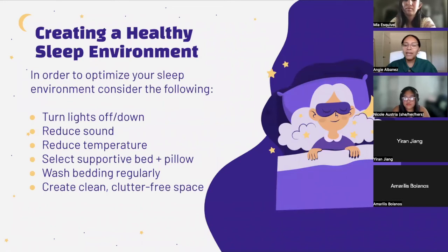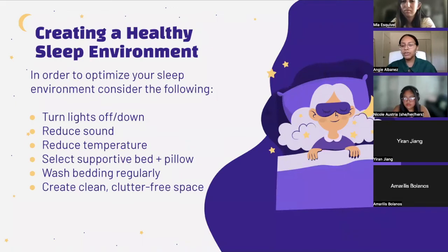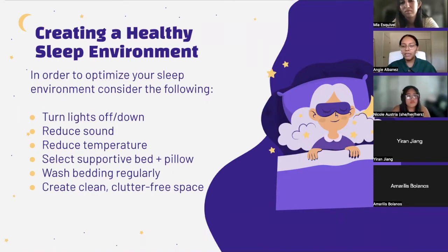In order to optimize your sleep environment, consider the following: turn the lights off completely or dim them if needed; reduce the sound in the room; and reduce the temperature — setting the thermostat between 60 to 67 degrees is the optimal suggested temperature. Select bedding and pillows that are both supportive and comfortable, and wash your bedding regularly. Keep your sleeping environment clean and clutter-free. Make sure not to use your bed for things such as working or eating — your bed should only be used for intimacy and sleep.